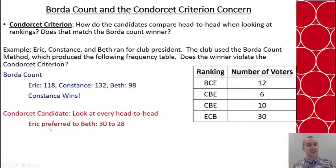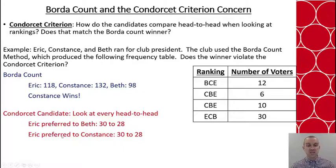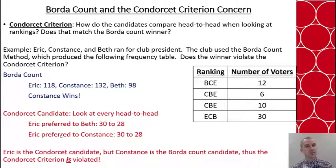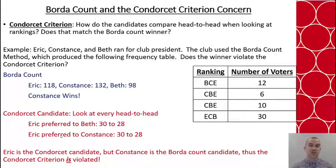Then comparing Eric to Constance: Constance is preferred over Eric in three groups, but Eric beats Constance with those 30 votes. So in both head-to-heads, Eric is preferred 30 to 28 against the other two candidates, which means he is the Condorcet candidate — but he lost the Borda count. So in this case, the Condorcet criterion is violated. Note that if Eric had lost to Constance head-to-head but beaten Beth, there would be no Condorcet candidate at all. But since he won both head-to-heads, the criterion is violated.